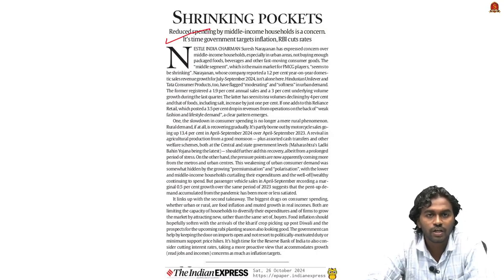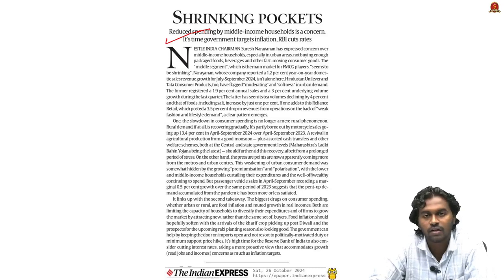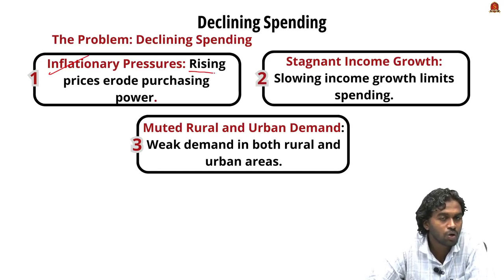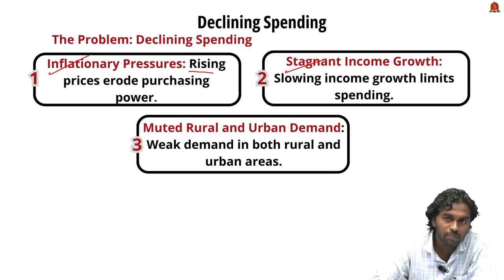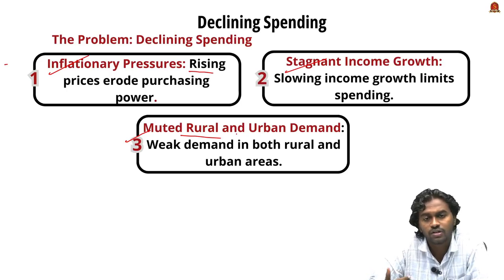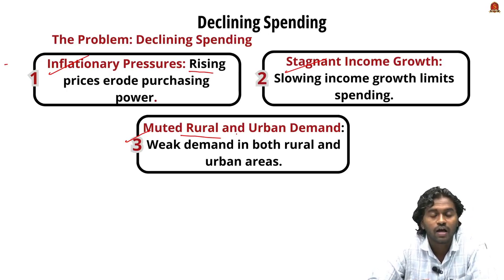The third article, 'Shrinking Pockets,' discusses the recent fall in demand among middle-income households, especially in urban areas, for consumer products. The key reasons include: inflationary pressure — rising price levels reduce purchasing power; stagnant income growth — limited income pushes households to spend only on essentials; and uneven rural-urban demand — while rural demand is showing recovery due to good monsoon, urban demand remains weak due to income stagnation and inflationary pressure.